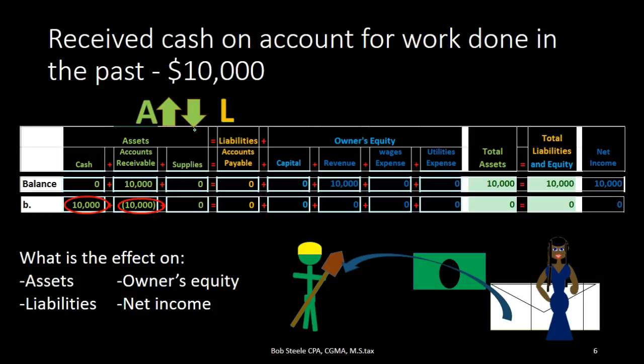When we move to debits and credits that will make more sense, because we'll never have a transaction without a debit and a credit. But in terms of the accounting equation, this one can be tricky. There's no net effect on anything — assets went up and down, no effect on liabilities, no effect on equity. Also note there's no effect on net income even though we received cash, because under the revenue recognition principle we already recorded the revenue last time when we earned it.